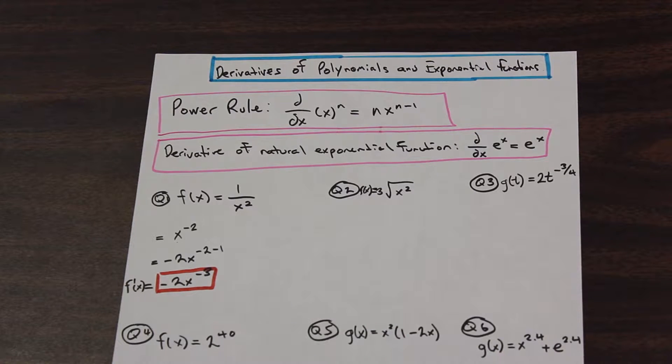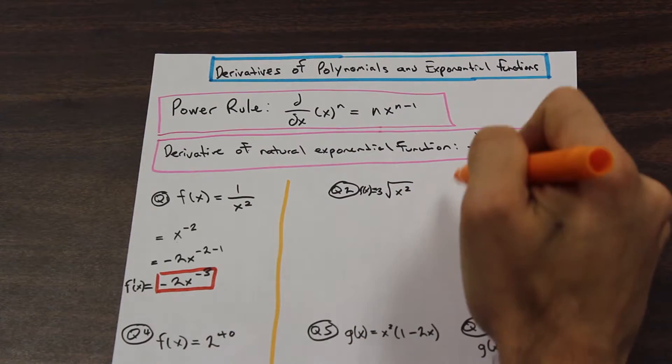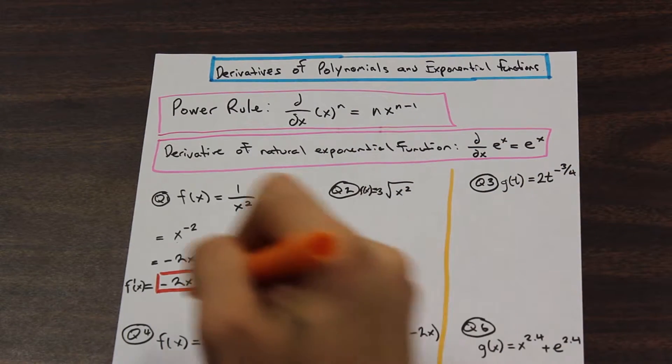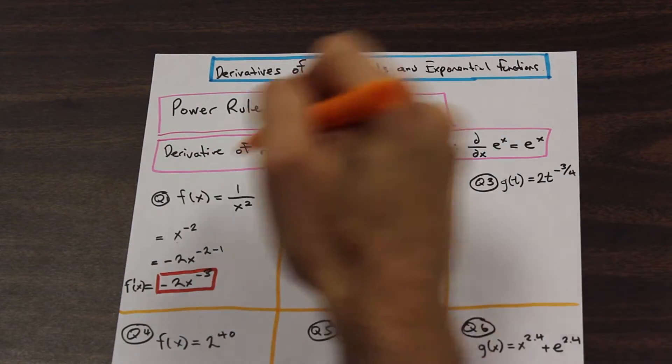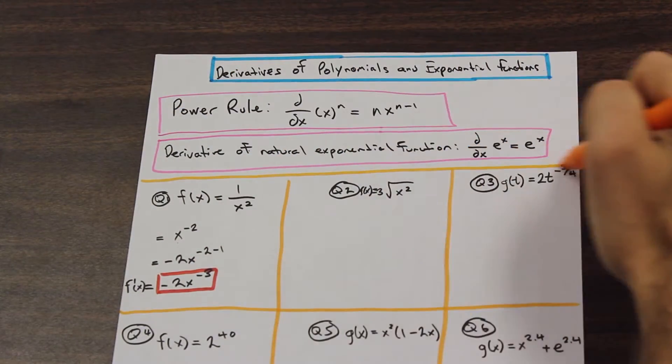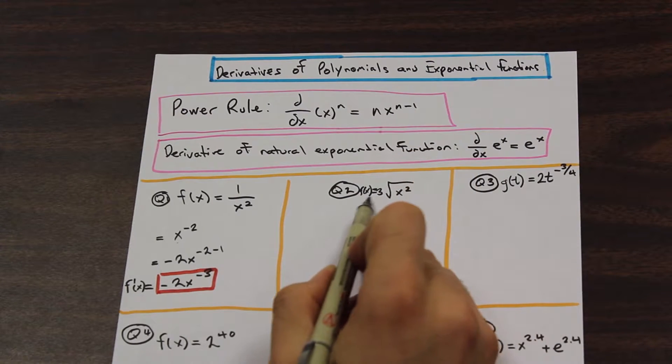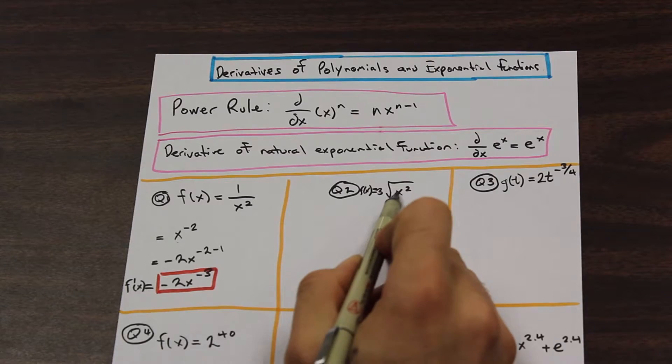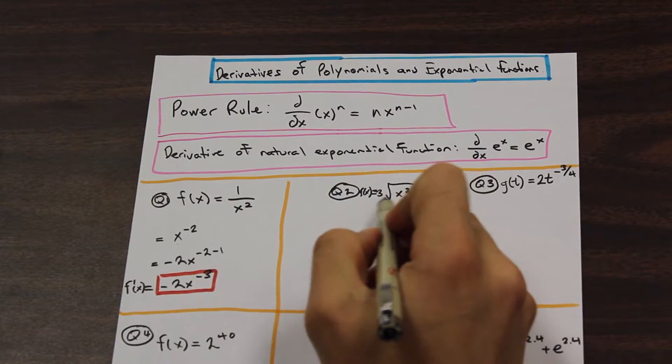So next one. Let me just separate these here for you guys so we're not getting confused. Perfect. So let's continue to the second question. And we have f of x is equal to the third root of x squared.